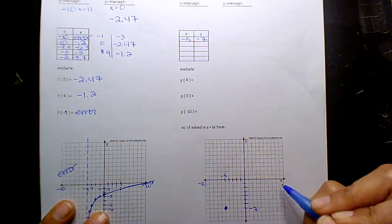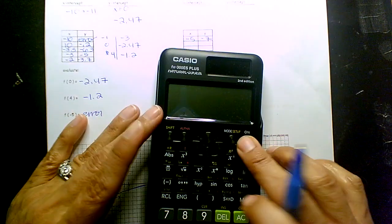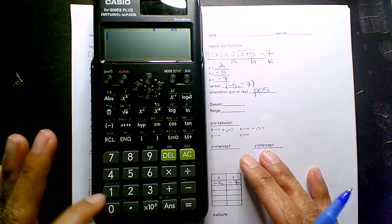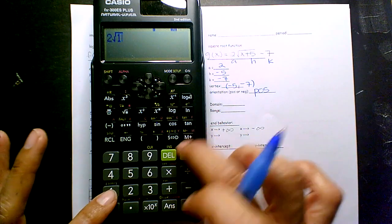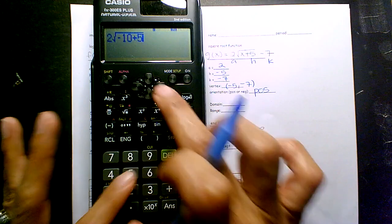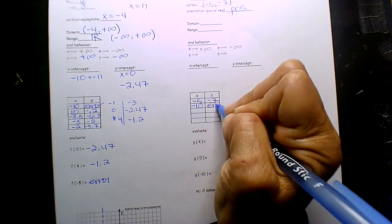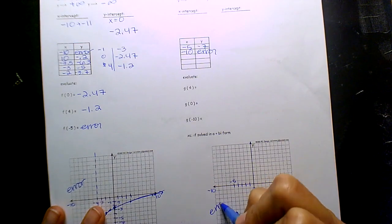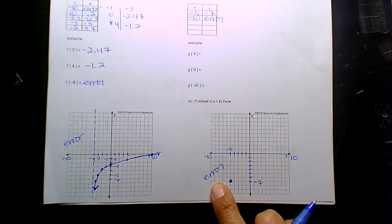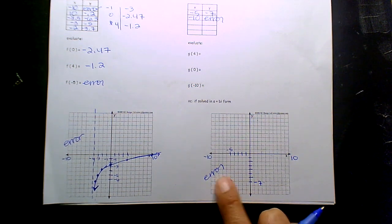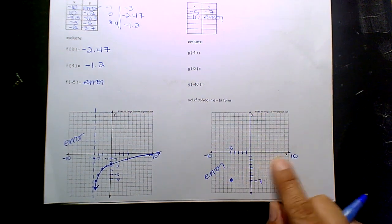If you want to plug in negative 10 and positive 10, right? So if I substitute negative 10 — 2 square root of negative 10 plus 5 minus 7 — I get error. So if I substitute negative 10, I get error. Here is my error, right? You can't have imaginary negative values inside the radical. So these are the values — you're going in this direction.